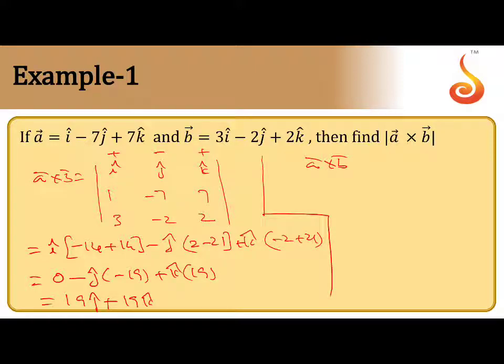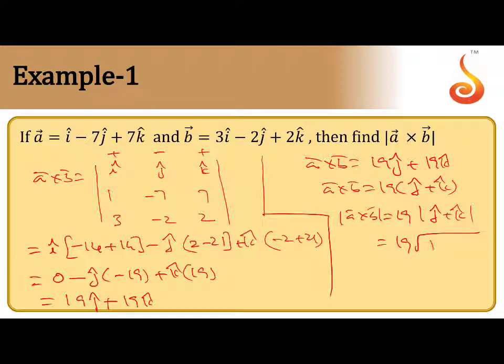That means a cross b is 19j plus 19k. You can take 19 common, that comes to 19 times j plus k cap. Now apply magnitude. So 19 scalar you can take outside. Only apply magnitude for j and k: 1 plus 1. So the answer is 19 root 2.